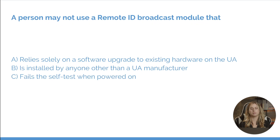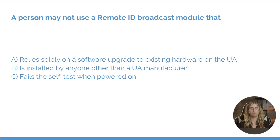A person may not use the remote ID broadcast module that: A, relies solely on a software upgrade to existing hardware on the UA. B, is installed by anyone other than the UA manufacturer. Or C, fails the self-test when powered on. Our answer here is C. One of the things we need to check before we take flight is that the small UA has passed the self-test for the broadcast module.